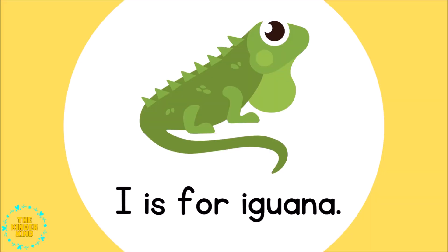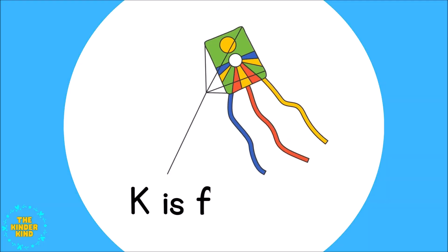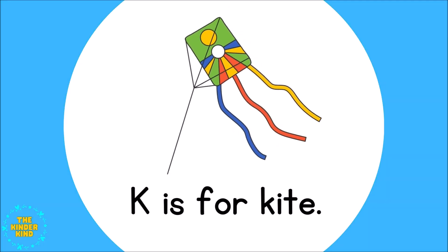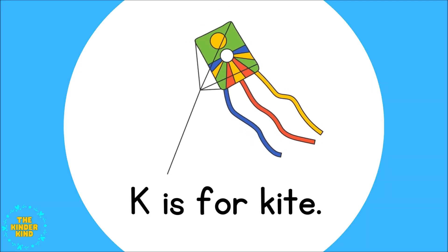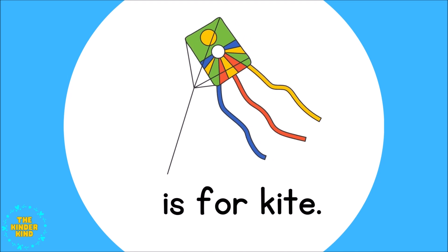I is for Iguana. I I Iguana. J is for Jump. J J Jump. K is for Kite. K K Kite.